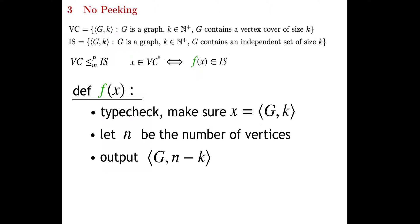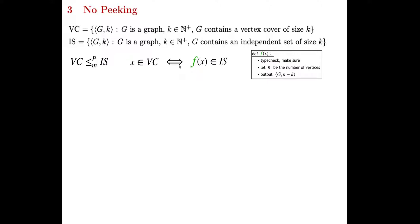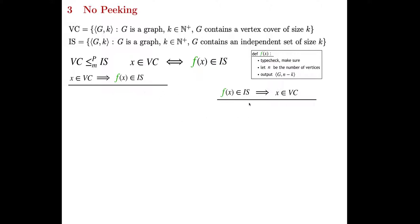What's left is to show that this transformation is correct by proving the biconditional. A common error is proving only one direction — you must prove both. To see why: imagine a trivial transformation that always outputs a hard-coded graph with an independent set of size 5. That would satisfy one direction but fail the other. So both directions are required to confirm a valid reduction.